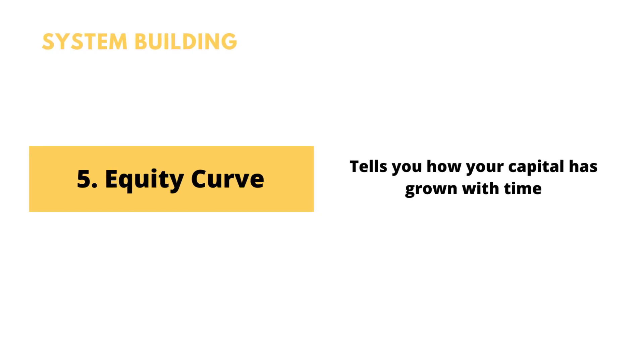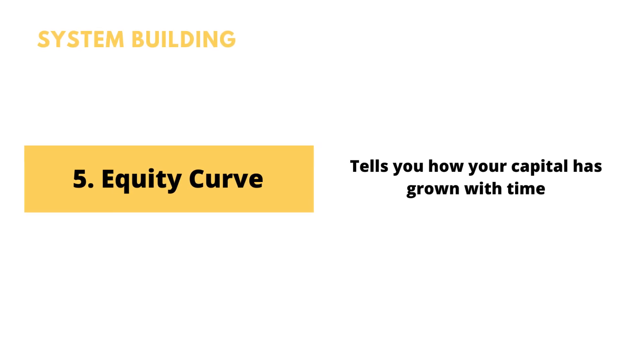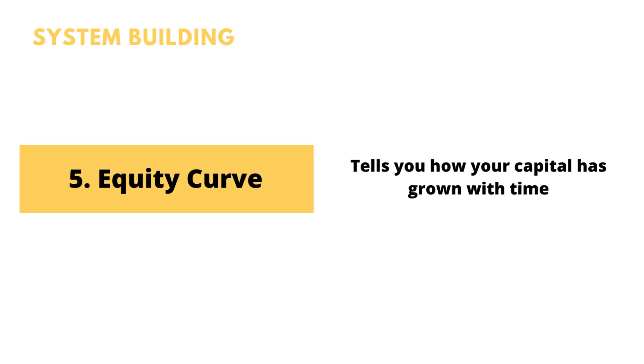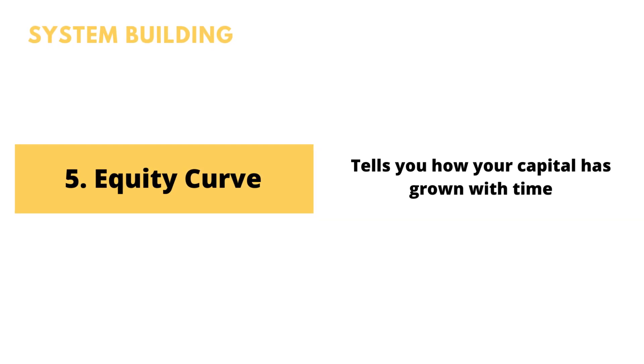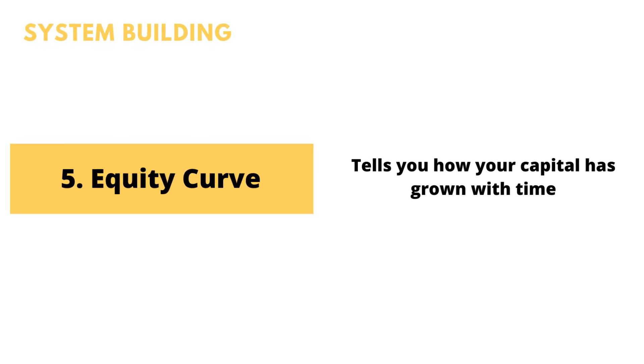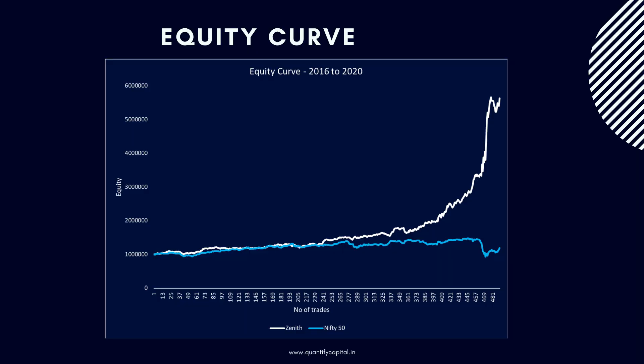The fifth step is the equity curve. It is basically a plot of the cumulative P&L. It tells you how your capital has grown over time if you had followed this strategy and this trading logic.